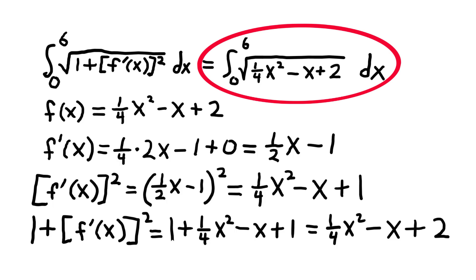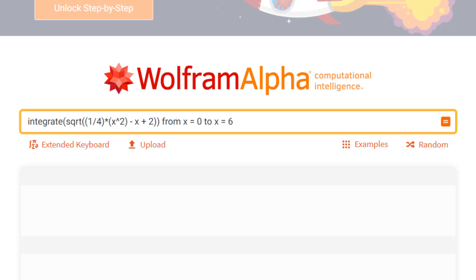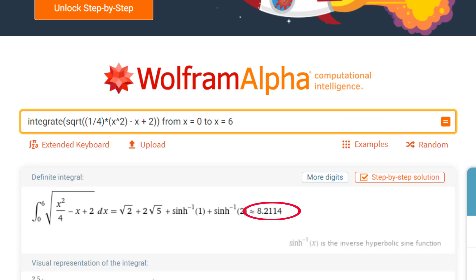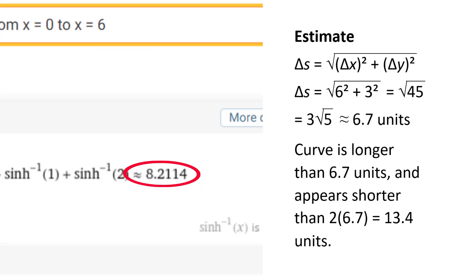This is a mess. At the point in many calculus courses when arc length is introduced, we do not yet know how to evaluate this integral. You may be able to evaluate it on your calculator. I am going to use Wolfram Alpha. Wolfram Alpha gives us a result of 8.2114. This is the arc length of the curve. Compare this to the estimate: we determined that the arc length was definitely more than 6.7 and appeared to be less than 13.4. A length of 8.21 fits that description.